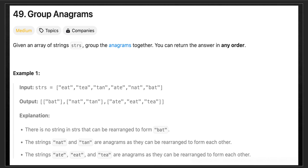Anagram grouping is also used for password security - it enhances password strength - and for encryption. Real life applications include Google search suggestions, Grammarly as a spell check tool, autocorrect, and password managers like LastPass or 1Password. It is also used in bioinformatics tools like BLAST and GenBank.